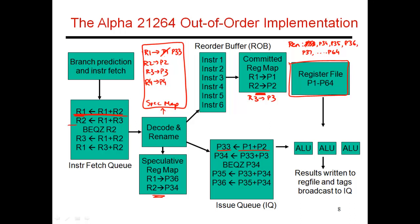Then I rename the second instruction. It needs the values in R1 and R3. The latest value of R1 is found in P33, and the latest value of R3 is found in P3. So this instruction gets renamed to get its input operands from P33 and P3. It puts its result in the next rename register, P34. I update the speculative map table to say the latest value of R2 can now be found in P34.